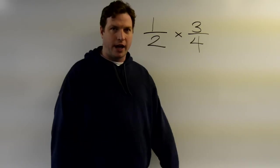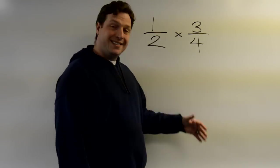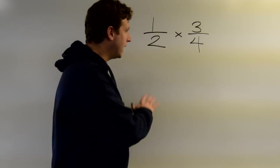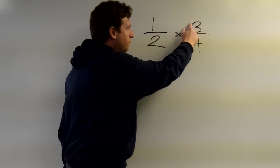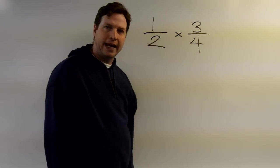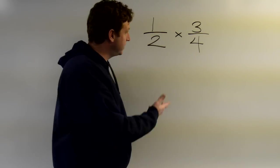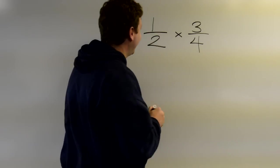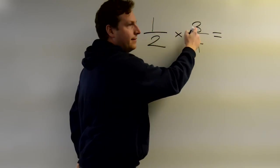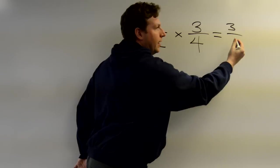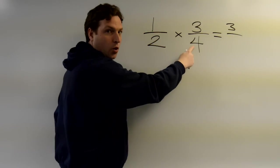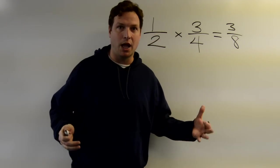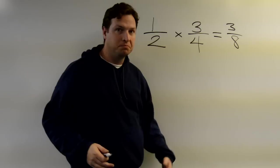Once we have adding and subtracting fractions down, we're going to look at multiplying them. It's actually my favorite because it's the easiest. All we do is multiply straight across. It's like two multiplication problems that results in a fraction. One times three is three, two times four is eight. That's it when you're multiplying fractions straight across every time.